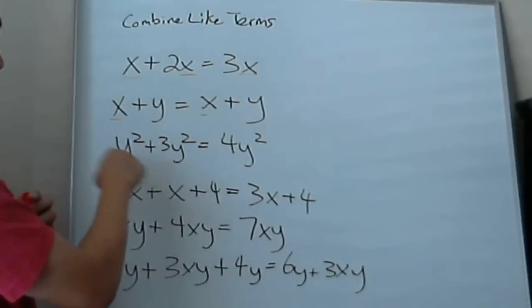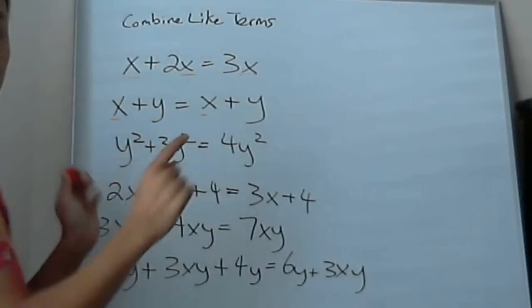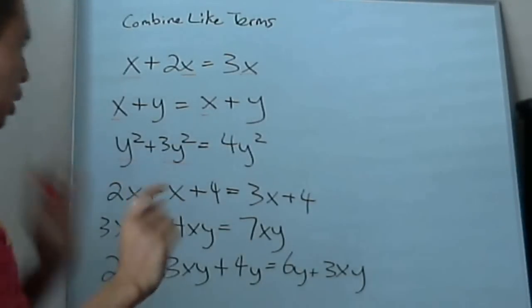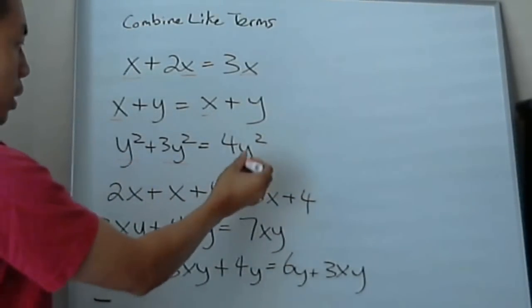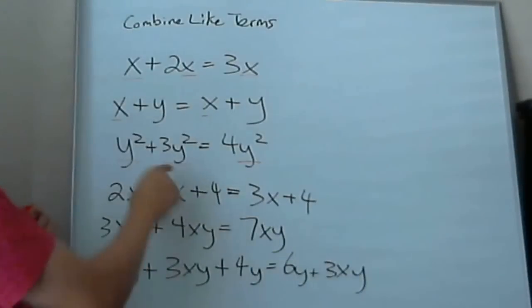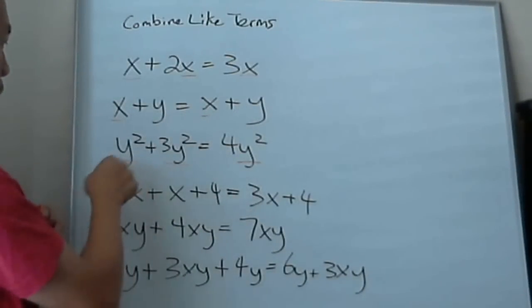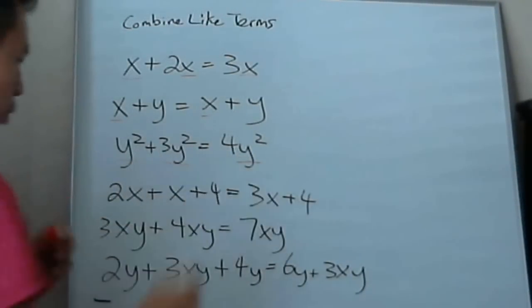So for this example, if I have x here, y squared plus x, you can't combine them. Or y squared plus y, you can't combine them. But since this is y squared plus another y squared, so y squared plus 3y squared, that'll equal to 4y squared, because they're the same thing. So 1y squared plus 3y squared is 4y squared.